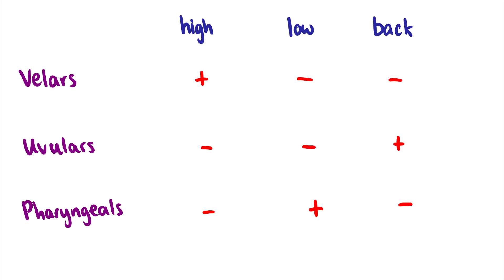So let's take a look at uvulars, for instance. So we have k as a velar. If we move back further, we get uvular like q. In this case, our tongue is no longer high. We've lowered it a little bit. But we haven't made it super low. It's just essentially central. But it's more back. So q. It feels like it's in the back of your throat. So that's where this plus back is.